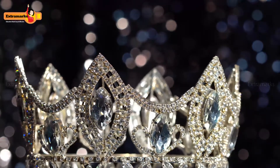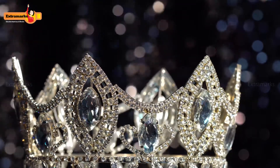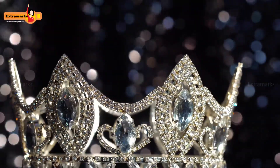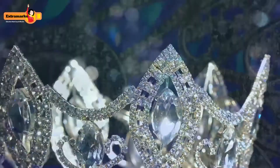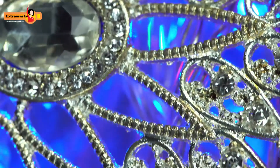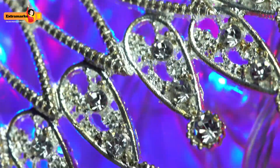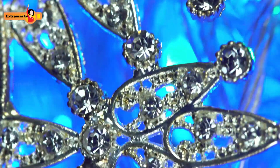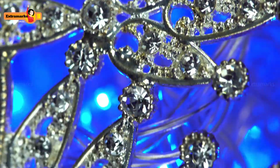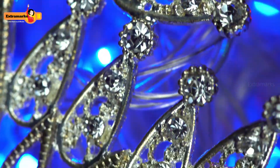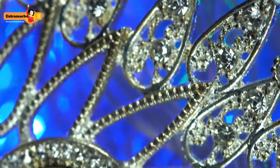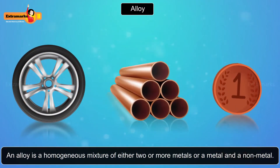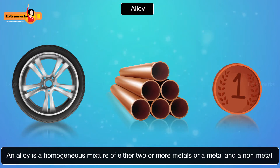The winners of beauty pageants are usually awarded an expensive and sparkling tiara. In a tiara, precious gems are mounted on a semicircular base made of an alloy of precious metals like gold, silver, and platinum. An alloy is a homogeneous mixture of either two or more metals, or a metal and a nonmetal.